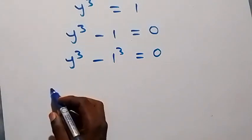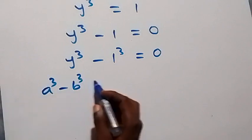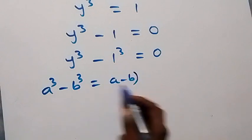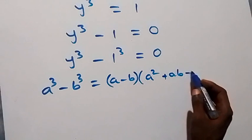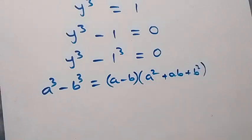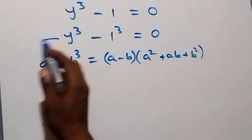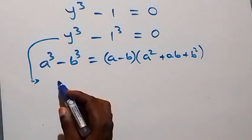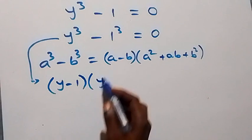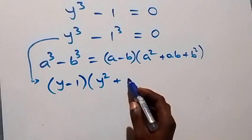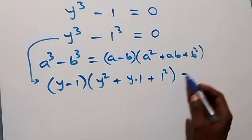Then here, this follows from the difference of two cubes: when we have a cubed minus b cubed, this is the same thing as (a minus b), then multiplied by (a squared plus ab plus b squared). And from here, a is the same thing as y and b is the same thing as 1. So we write it as (y minus 1) multiplied by (y squared plus y times 1 plus 1 squared), now equals to 0.